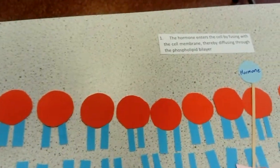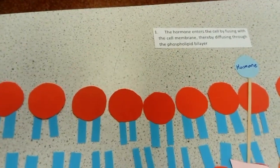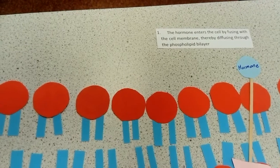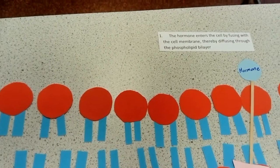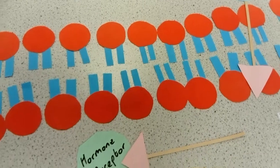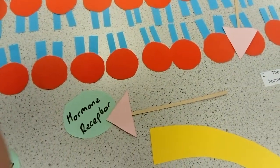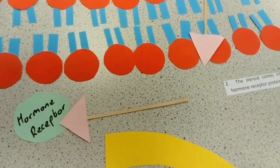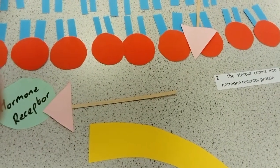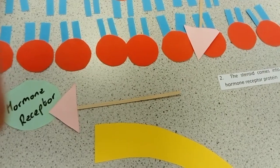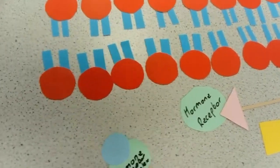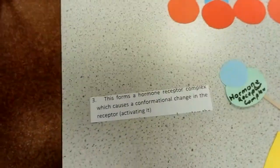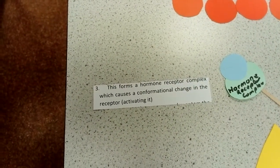The first thing that happens is the hormone enters the cell by fusing to the cell membrane, thereby diffusing through the phospholipid bilayer. The hormone then comes into contact with some sort of hormone receptor, thereby forming a hormone-receptor complex.